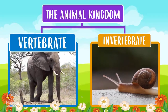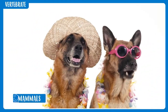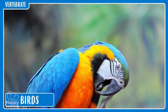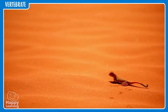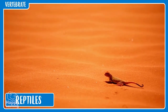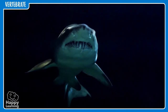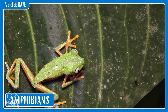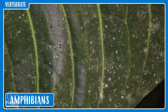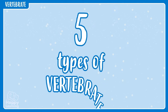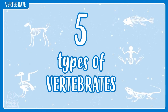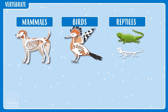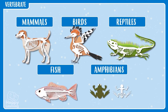Within the group of vertebrate animals are mammals, like these funny dogs; birds, like our friend the parrot; reptiles, like this gecko, which is a kind of lizard; fish, like this fearsome shark; and amphibians, like this little jumping frog. Remember, there are five types of vertebrates: mammals, birds, reptiles, fish, and amphibians.